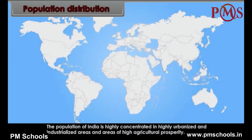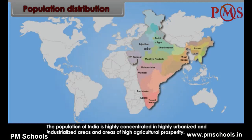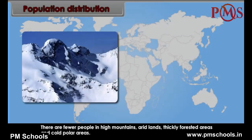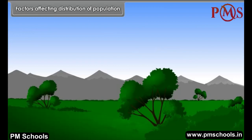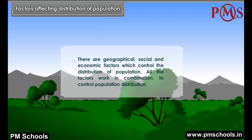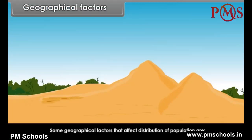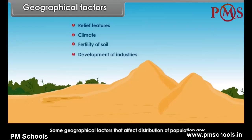The population of India is highly concentrated in highly urbanized and industrialized areas and areas of high agricultural prosperity. There are fewer people in high mountains, arid lands, thickly forested areas and cold polar areas. Factors affecting distribution of population include geographical, social and economic factors, which work in combination to control population distribution.